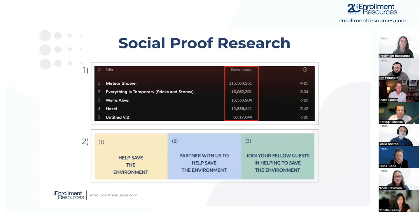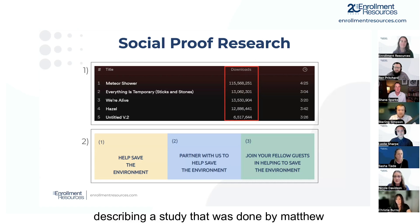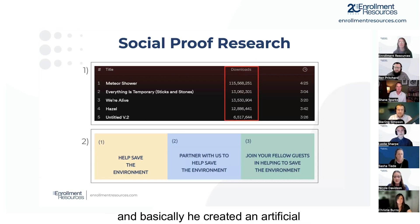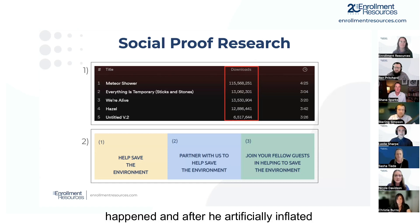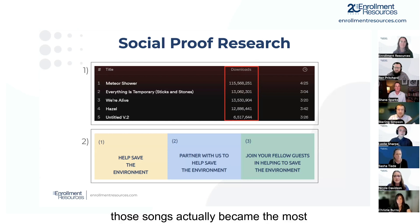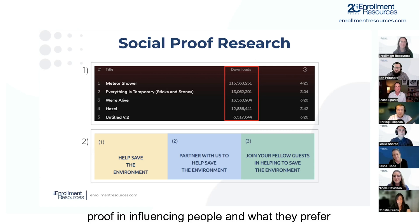There's been a lot of social proof research. One study by Matthew Salganik, a professor of sociology, created an artificial music streaming platform. About partway through, he artificially inflated the downloads of the least popular songs. After he did that, those songs actually became the most popular songs — which just shows you the power of social proof in influencing what people prefer.